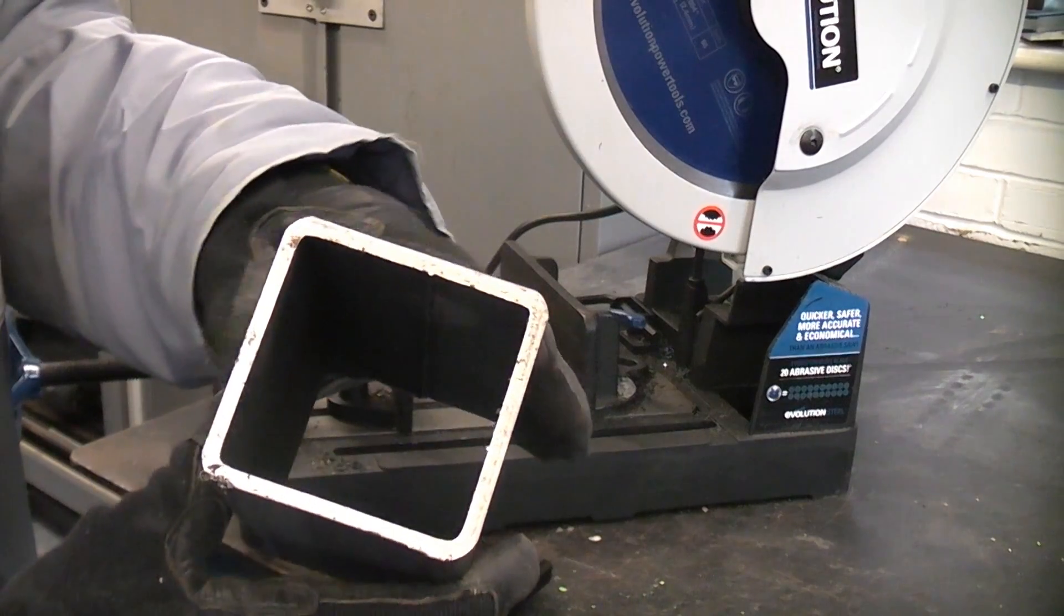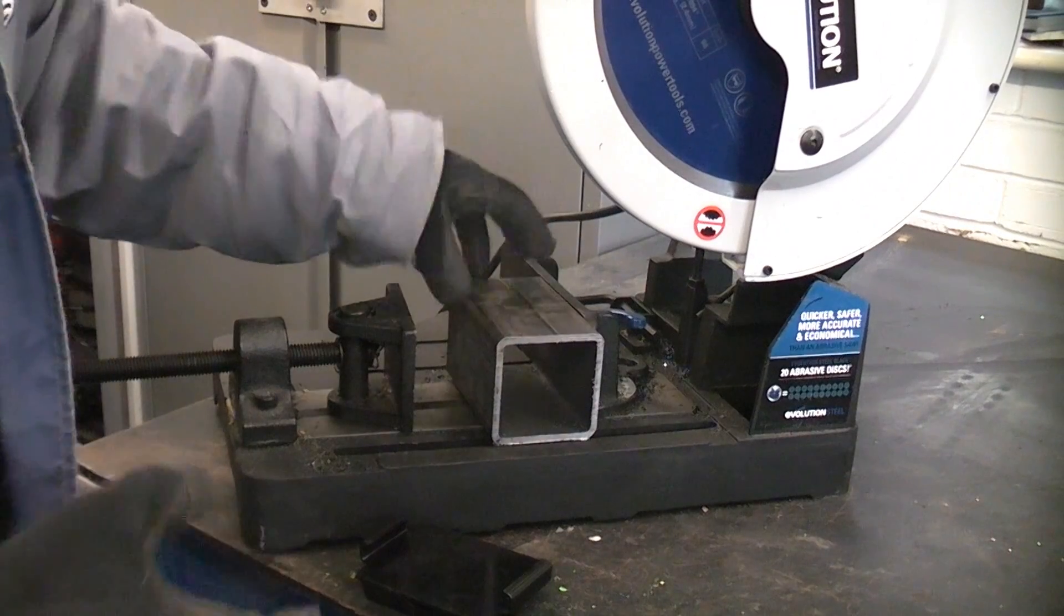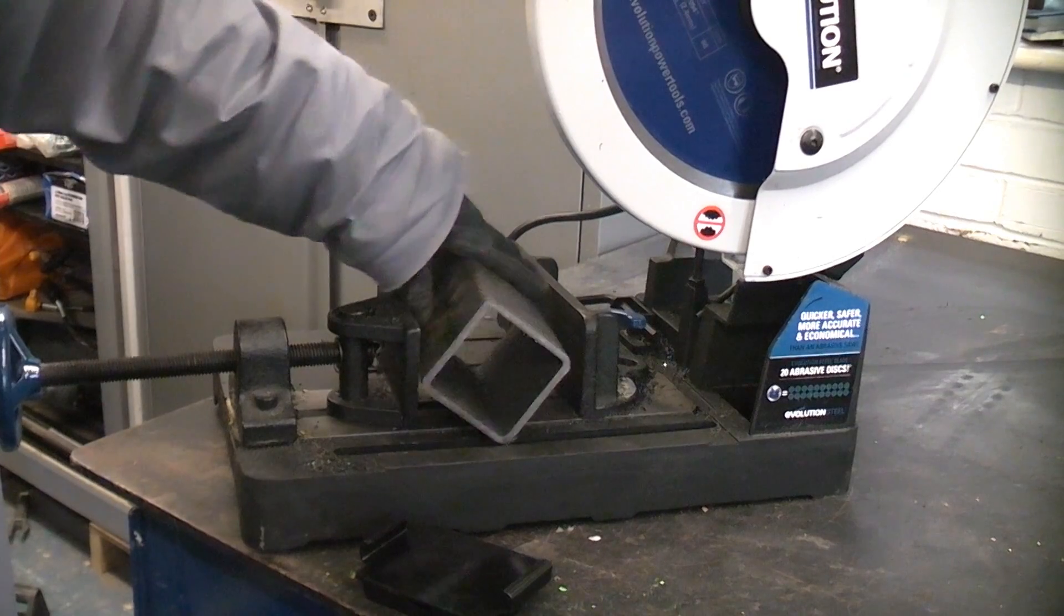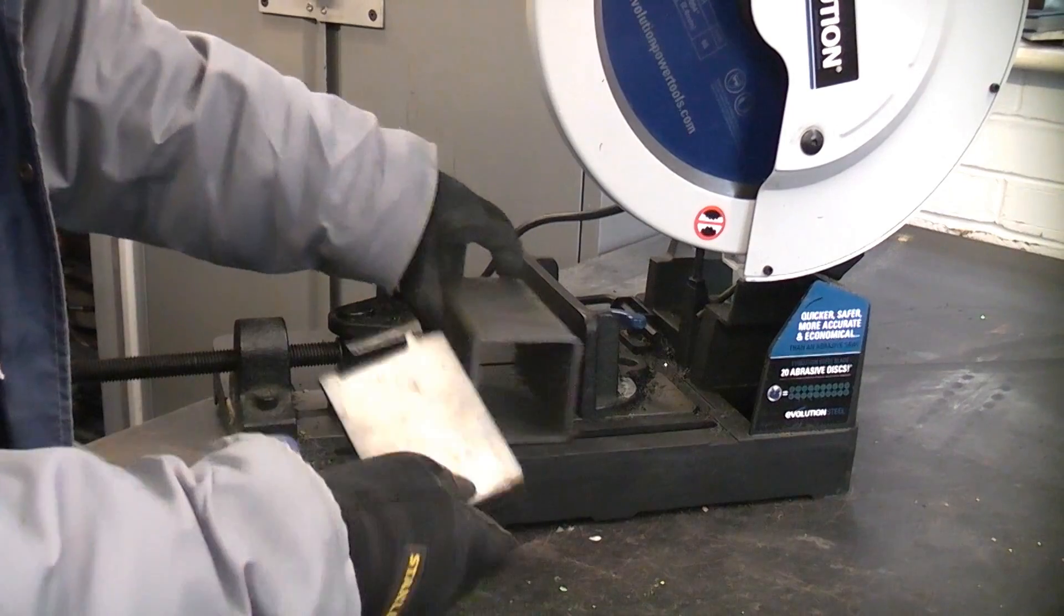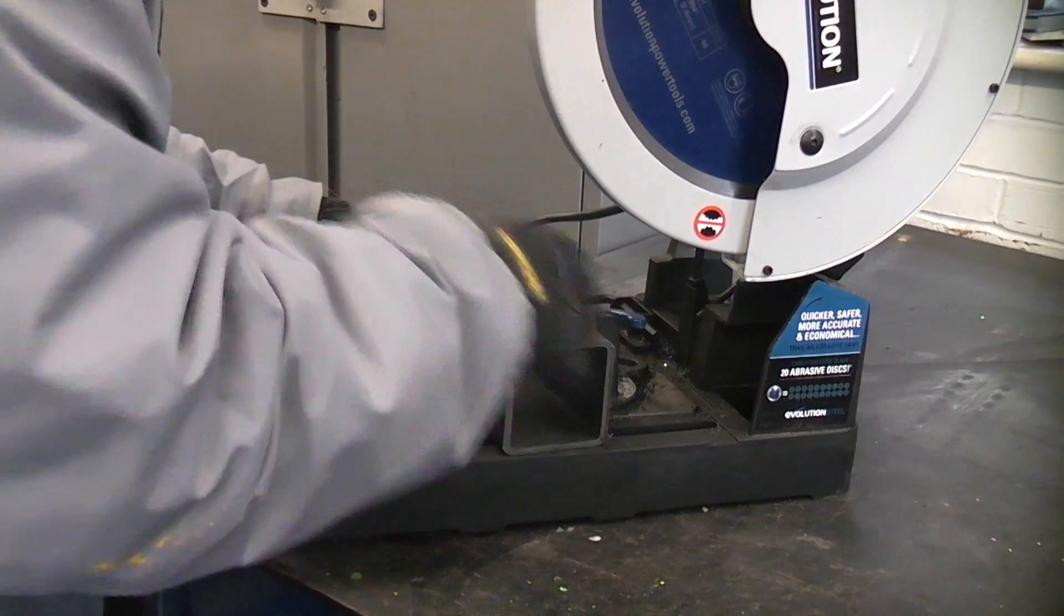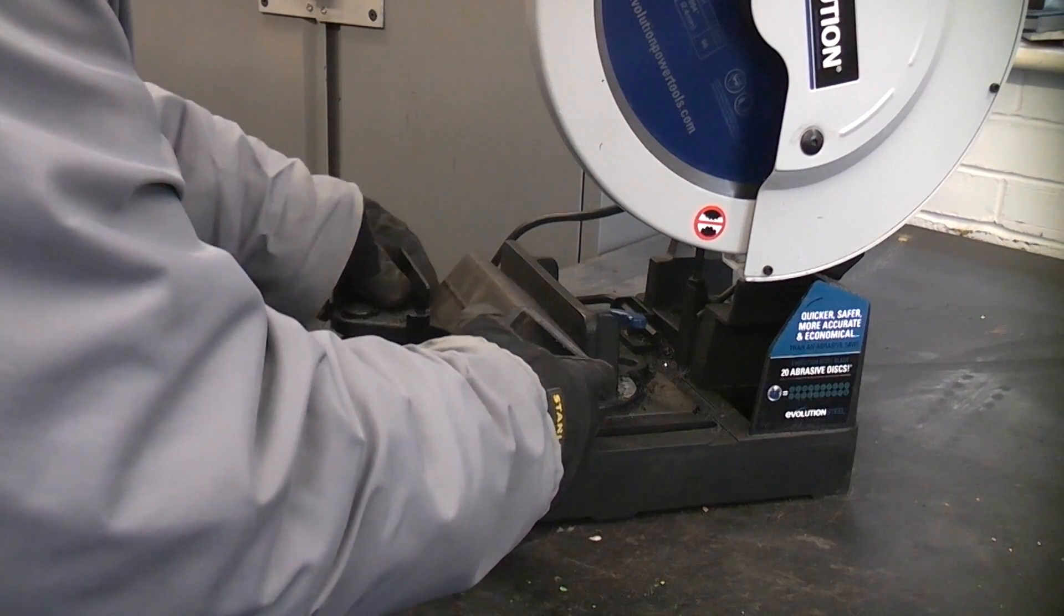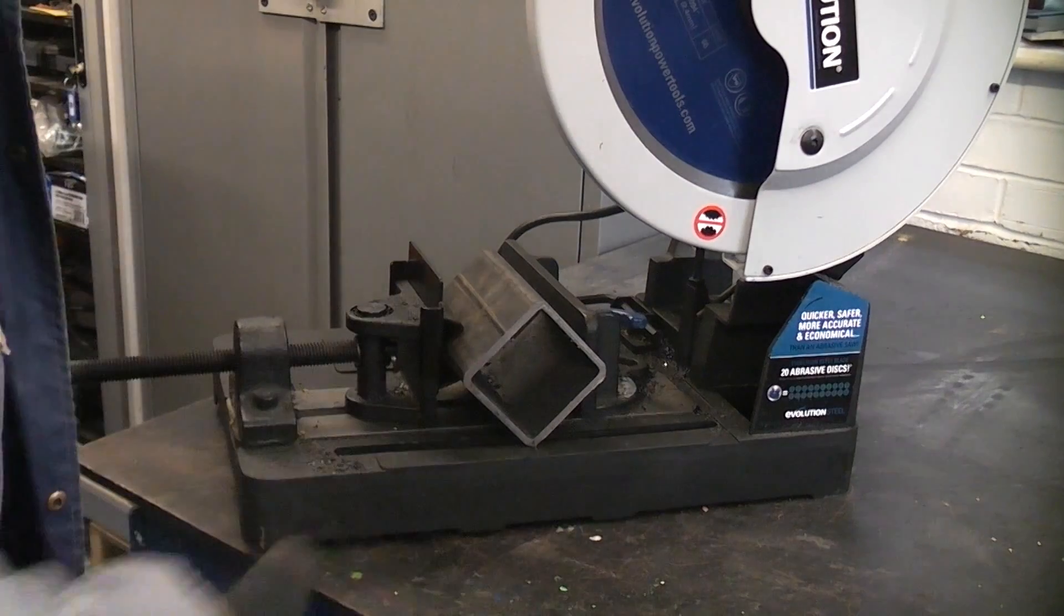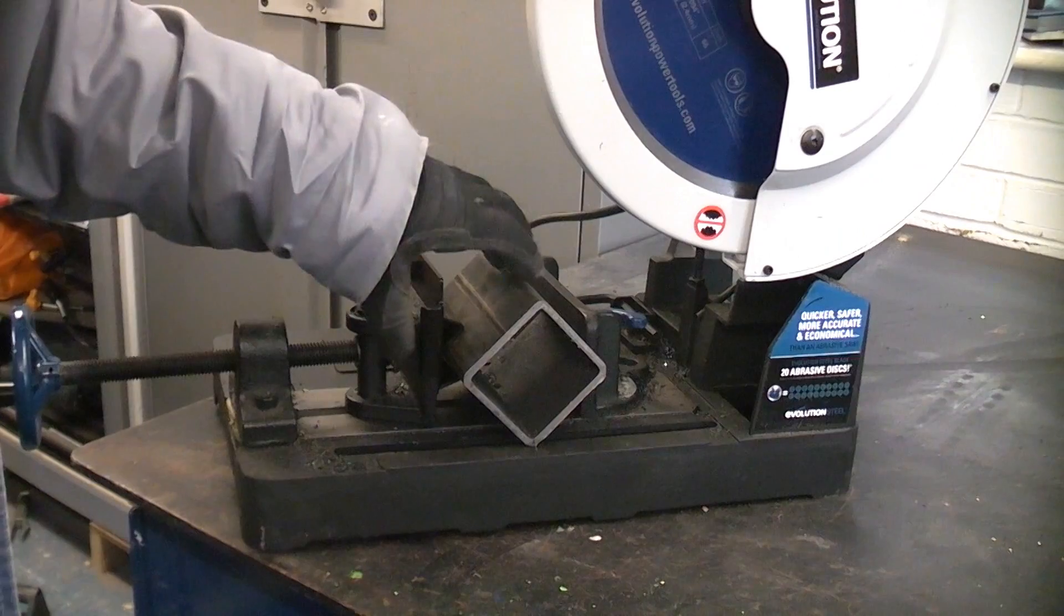This is a piece of 80mm by 80mm 5mm walled thickness mild steel. If you cut it in that orientation it will take approximately twice as long than if you cut it in that orientation because of the actual way the chips are removed when it's cutting. So if we use the adapter plate that's supplied with the saw, then clamp it in that position it will cut through there twice as quick as what it will if you lay it flat.